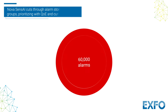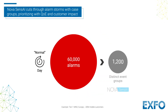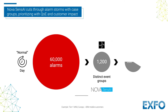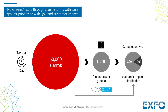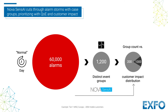NovaSense AI enables operators to cut through the thousands of alarms generated each day, grouping them automatically into case groups, then prioritizing them based on customer impact, making it much more manageable for operations teams to take immediate and effective action to resolve outage challenges and performance degradations.